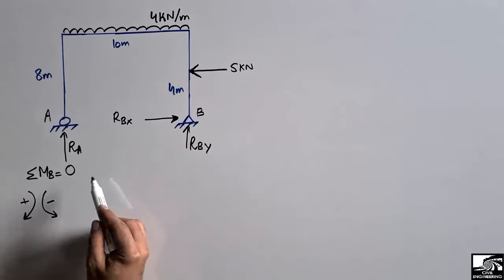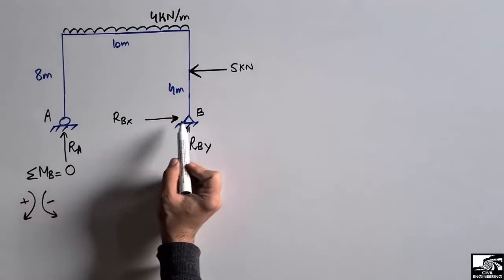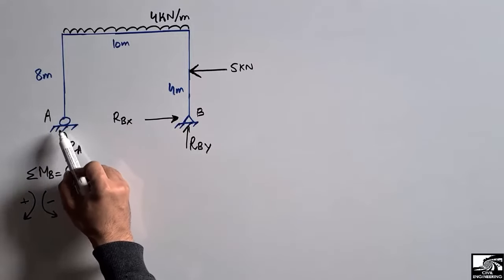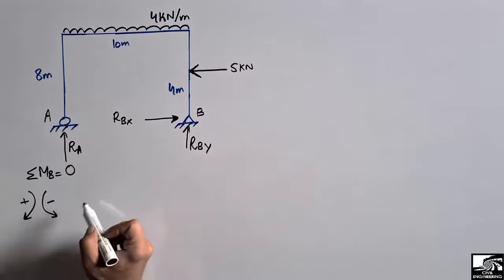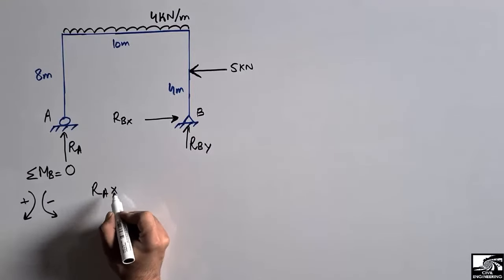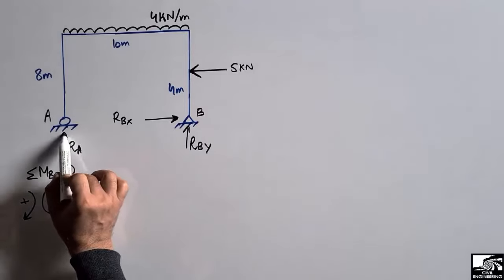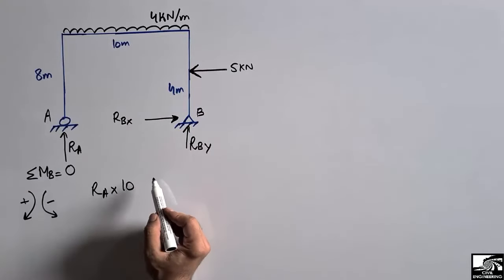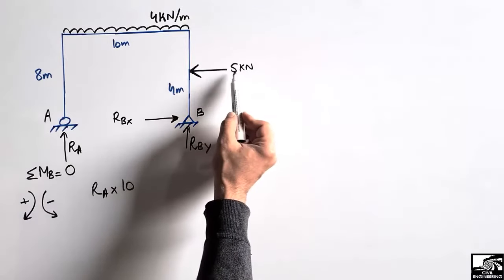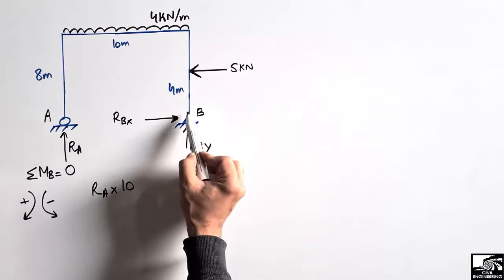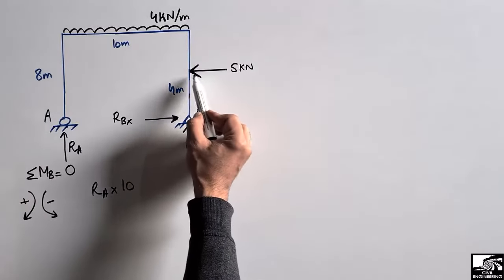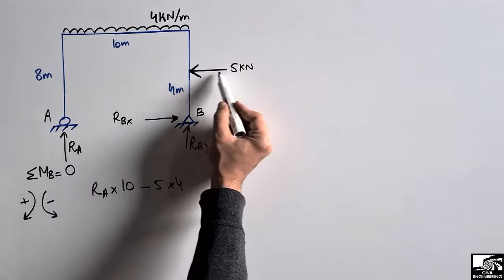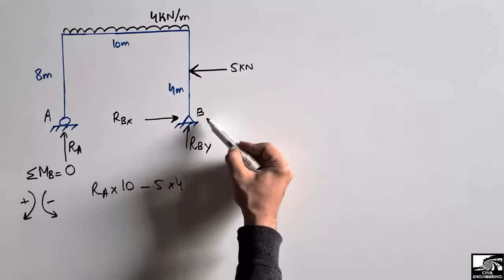Taking the summation of moments about point B equal to zero: RA creates a clockwise moment about B (positive), so we write RA multiplied by its moment arm of 10 meters. The 5 kN load creates an anti-clockwise moment about B (negative), so we write minus 5 multiplied by its moment arm of 4 meters.